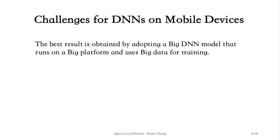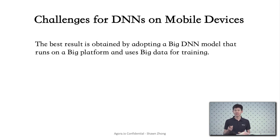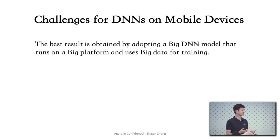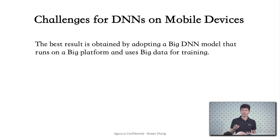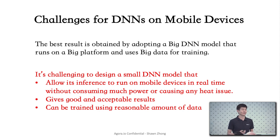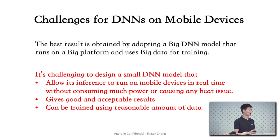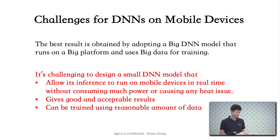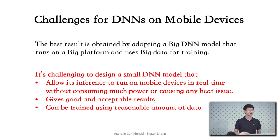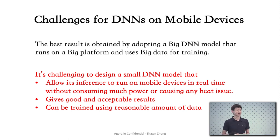The best results are usually obtained by employing big models running on big platforms, such as server computers with thousands of GPUs. Training also has to rely on a lot of data. This doesn't fit for mobile devices. The challenge for us is to come up with smaller models that can run on mobile devices in real time without consuming a lot of power or causing heat issues, while still achieving good and acceptable performance, and trained on a reasonable amount of data.